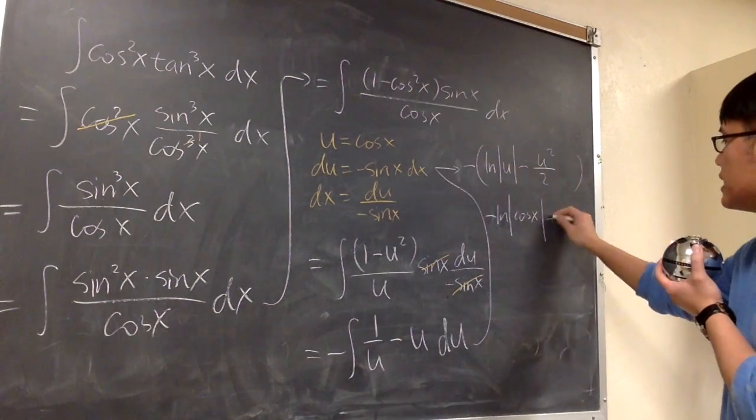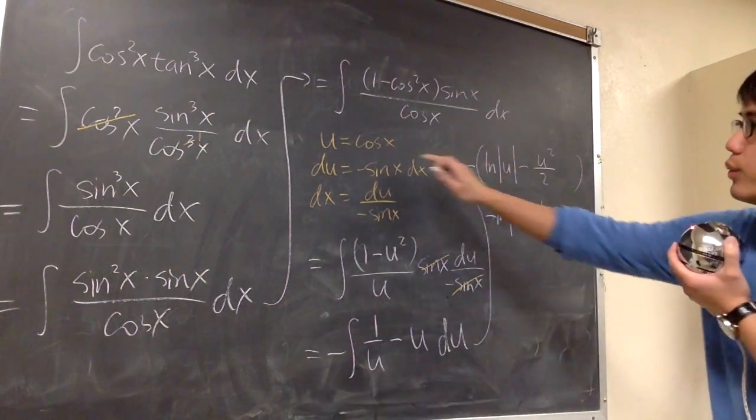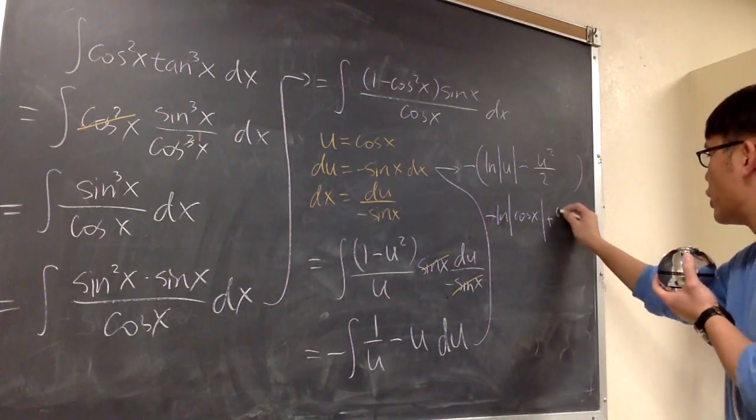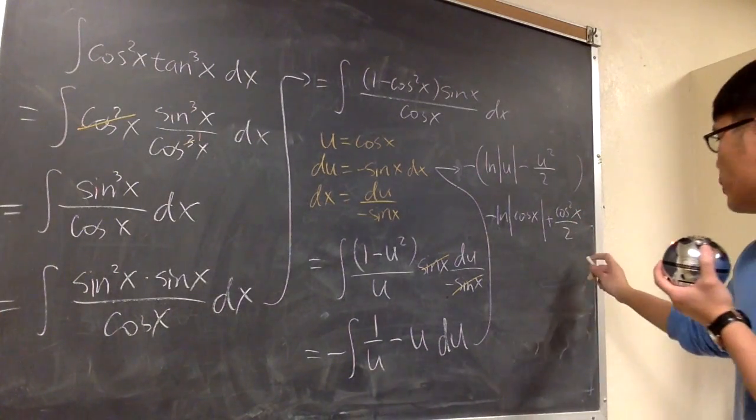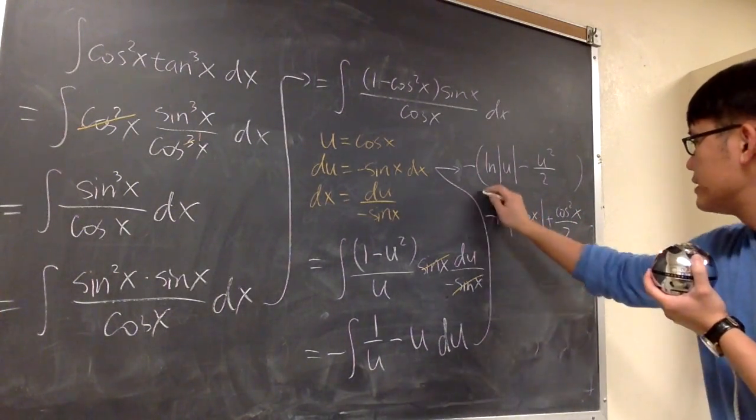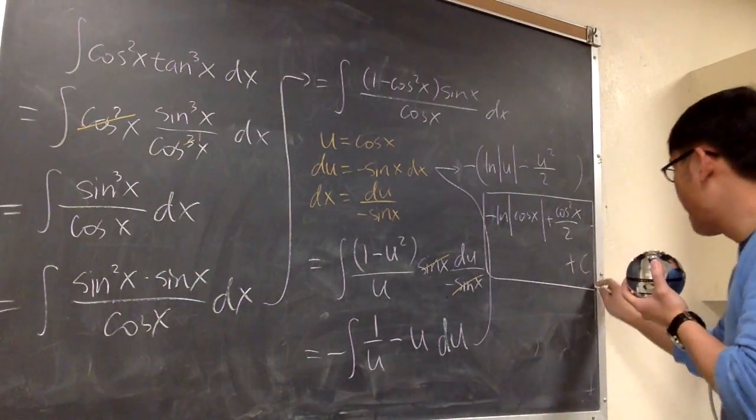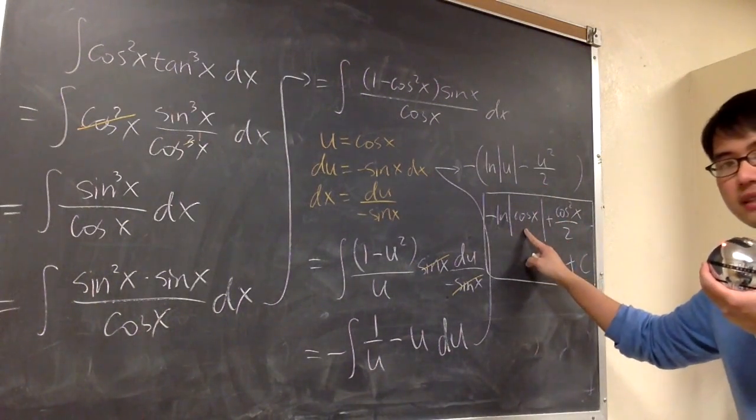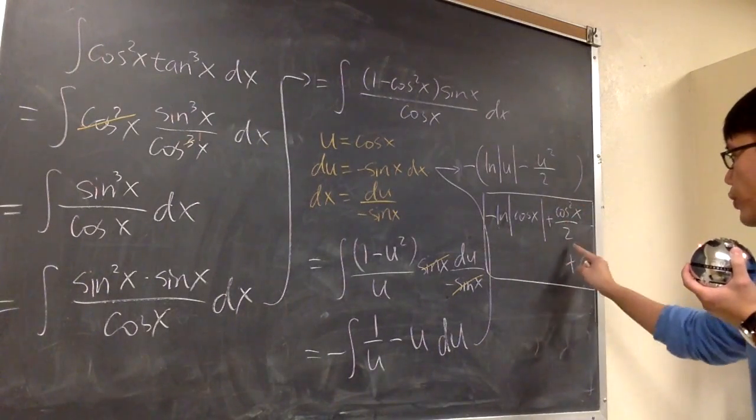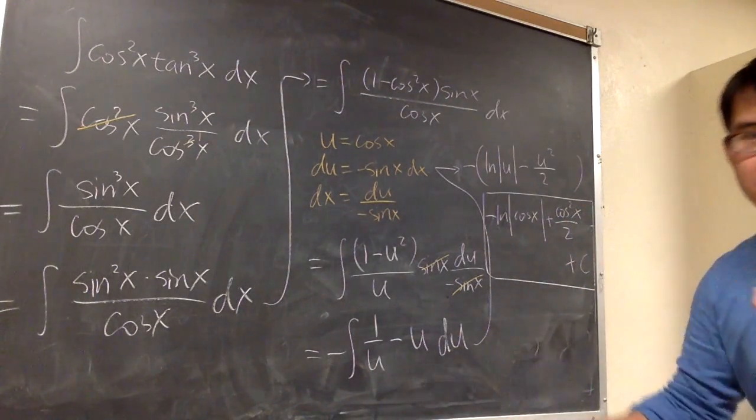Negative negative becomes positive, and this is u squared, which is cosine squared, cosine squared x over 2. And this right here will be the answer after you put a plus c somewhere. This is it. Negative ln absolute value of cosine x, plus cosine squared x over 2, plus c.